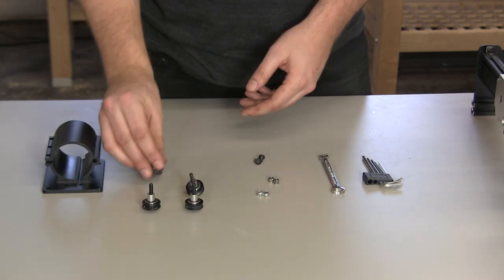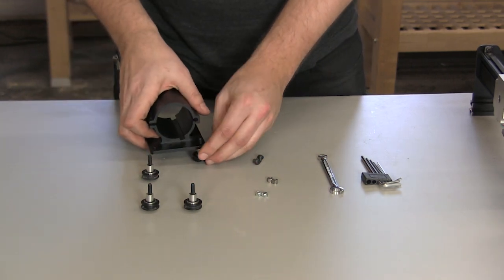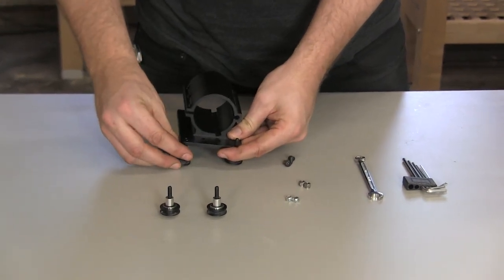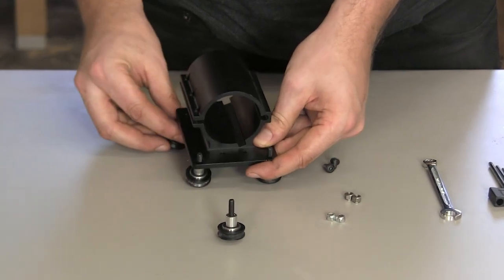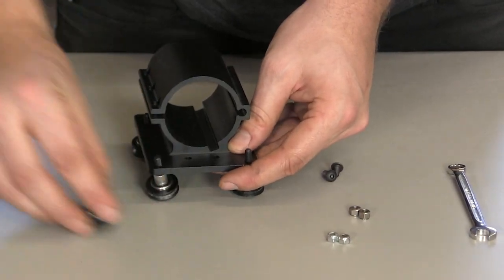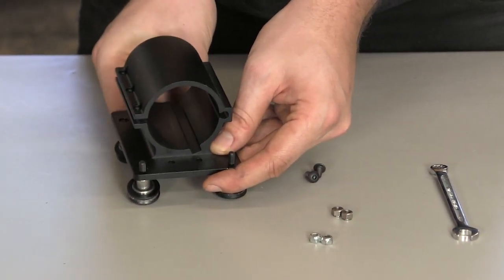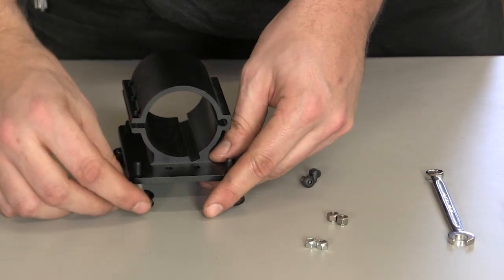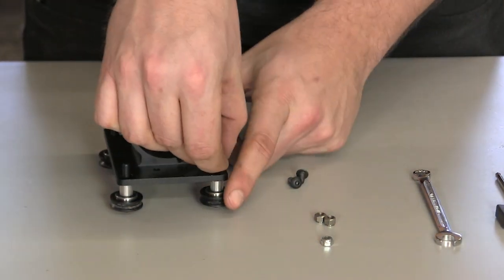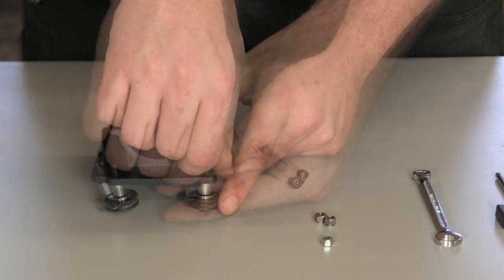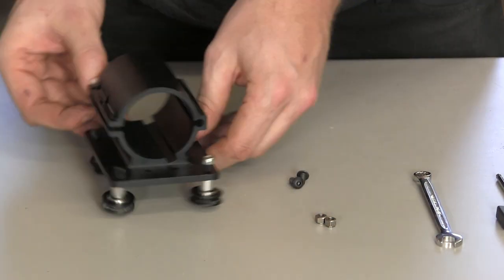Place these screws through the holes provided on the spindle mount. You'll notice there are smaller holes and larger holes. The smaller holes are for V-wheels with nylock hex nuts, and the larger holes are for V-wheels with eccentric nuts. Be sure that you put nylock hex nuts on the V-wheels in the smaller holes and eccentric nuts on the V-wheels with the larger holes.